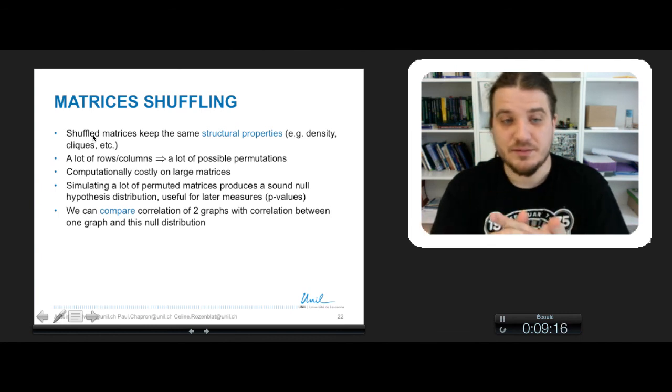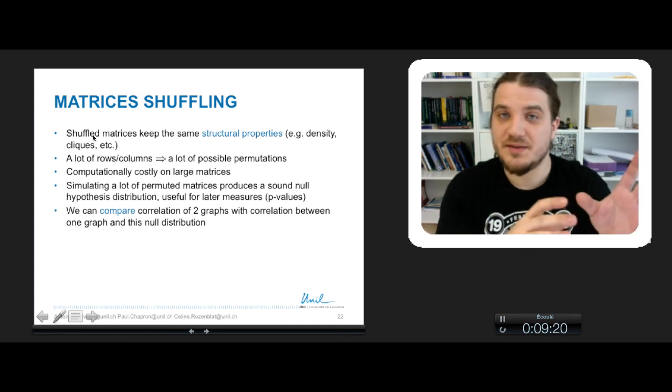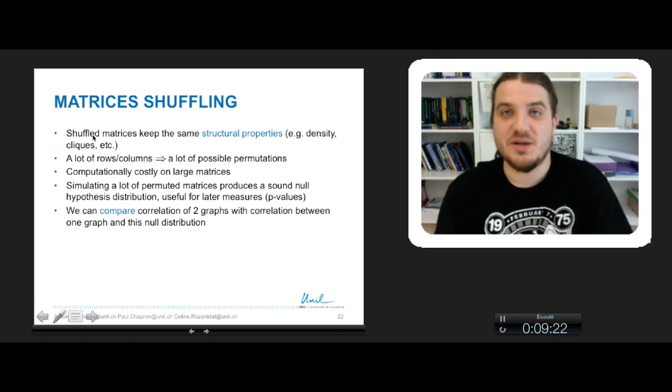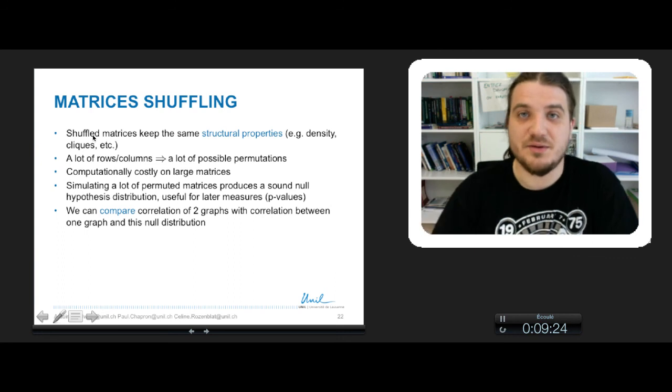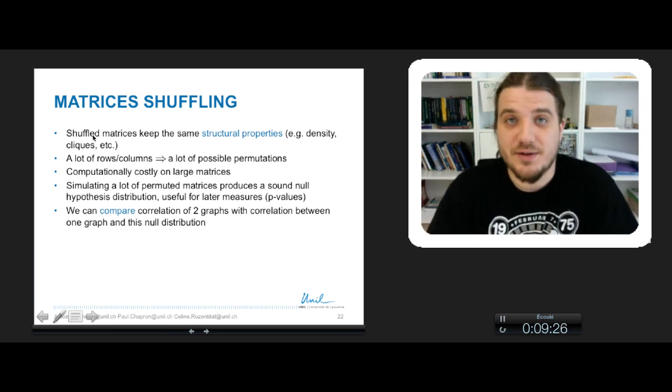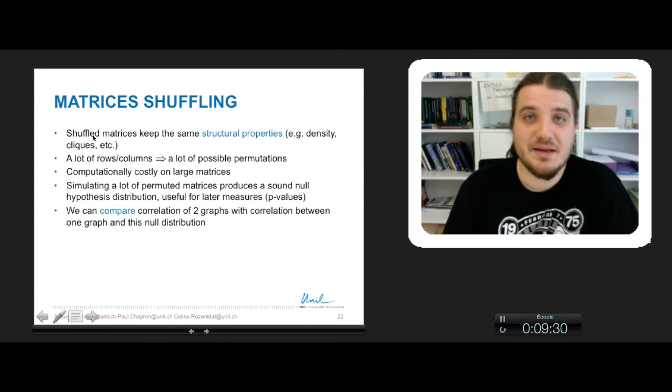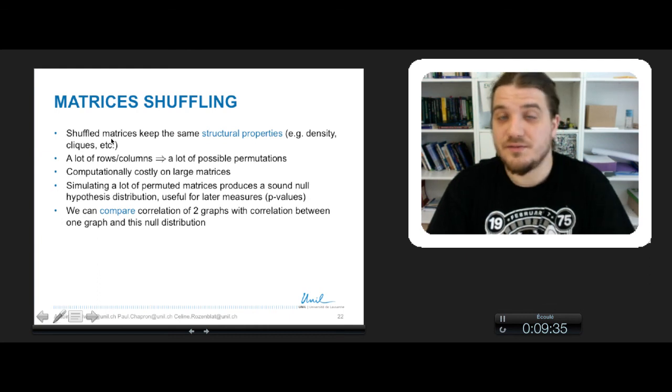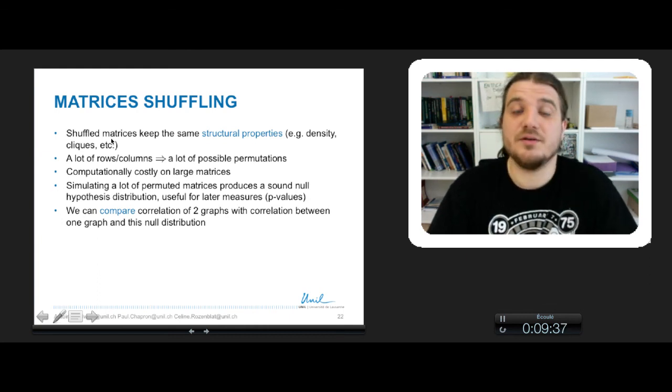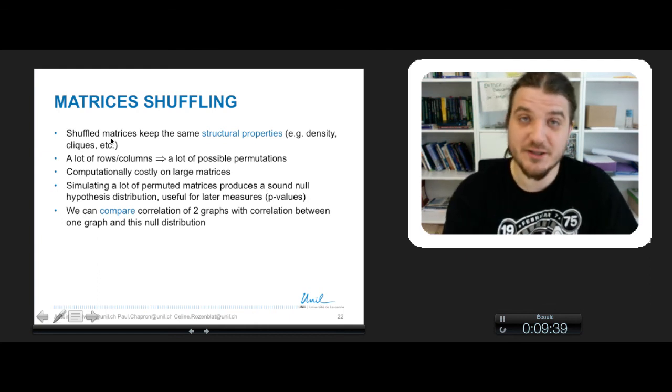And now that we have permutated matrix distribution with no dependence between the observed matrix G and the permutated matrix G' and all of its variants that have been permuted, we can compare the correlation between G and G' with the correlation between G and any matrix of the permutated matrix distribution. This is what we will see in the third part of the course on graph correlation test. Thank you.